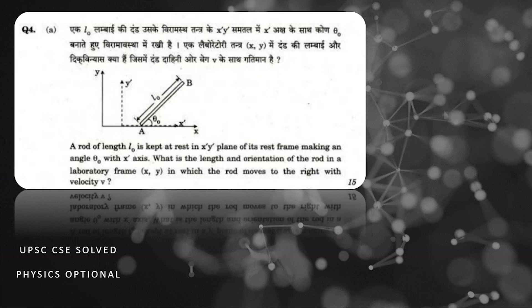Hello everyone. In today's video we will be seeing one of the questions from a previous year exam. There is a rod of length l₀ which is at rest in a rest frame S', making an angle θ₀ with the x'-axis. We now have to find out the length and its orientation in the xy frame, which is the lab frame. This rod is moving towards the right in the xy frame.